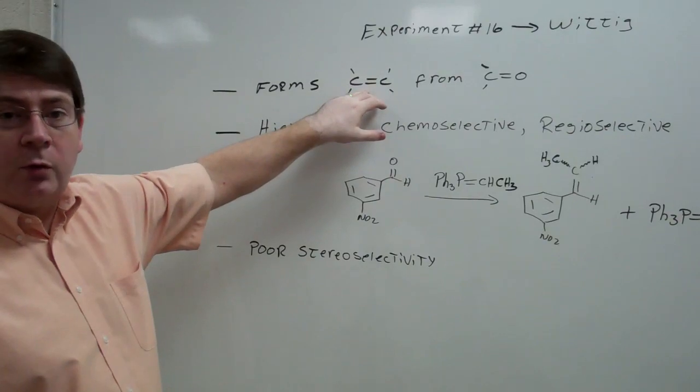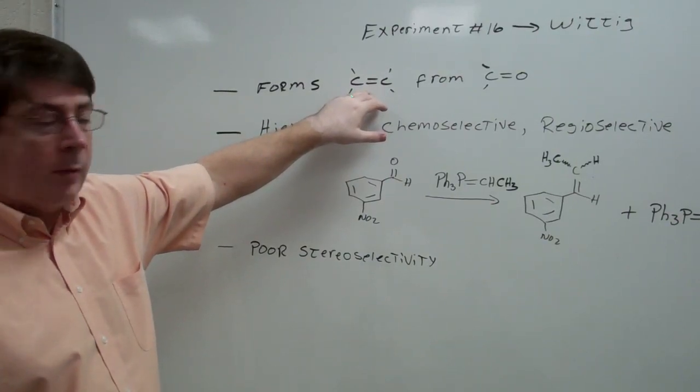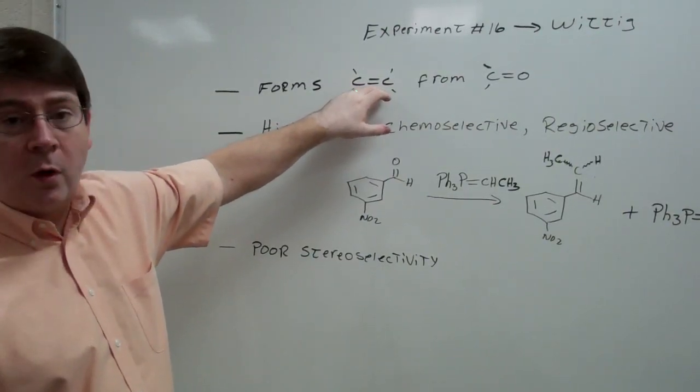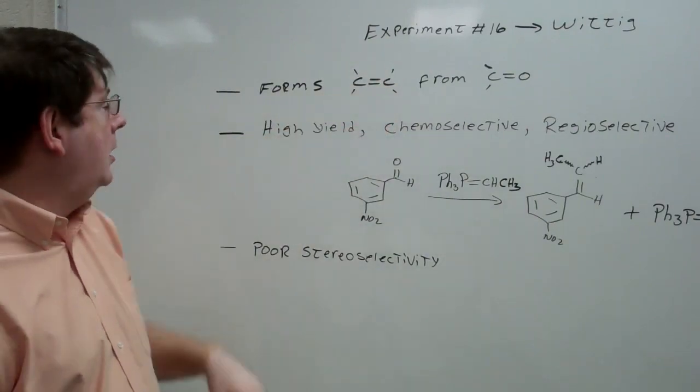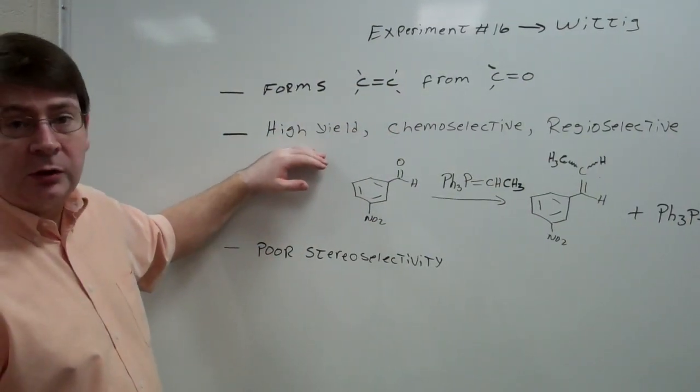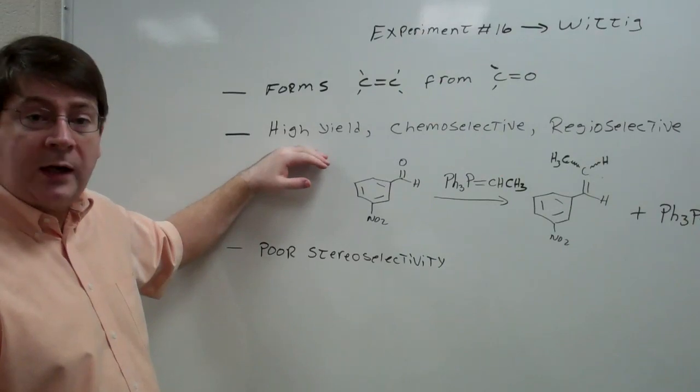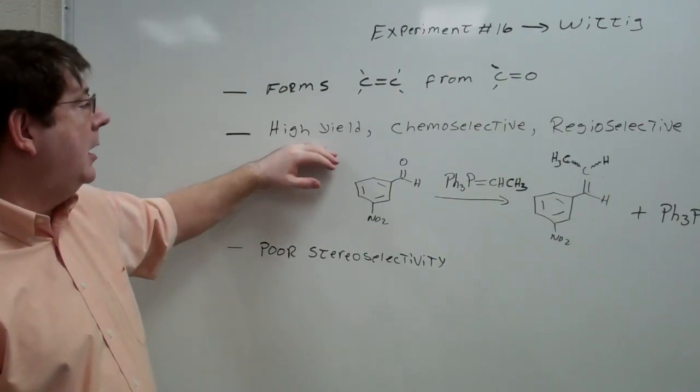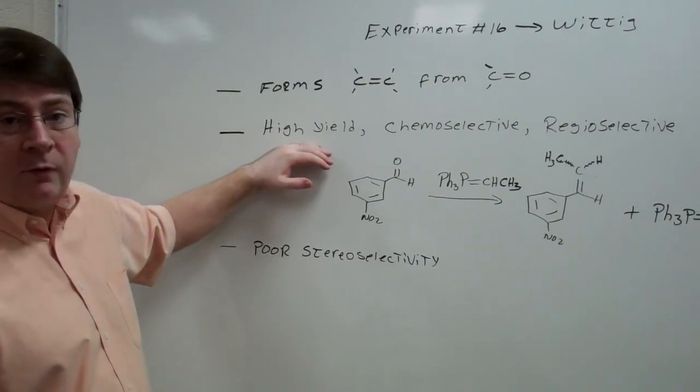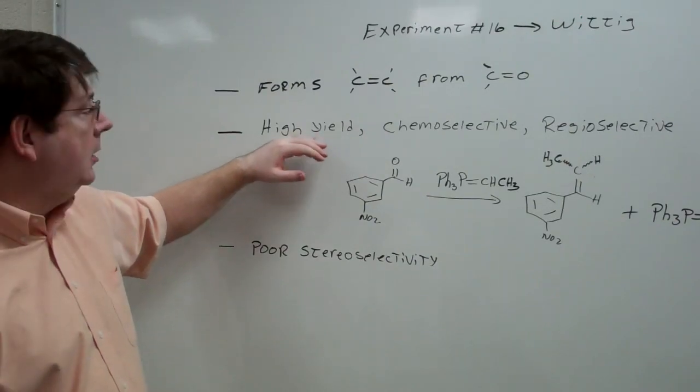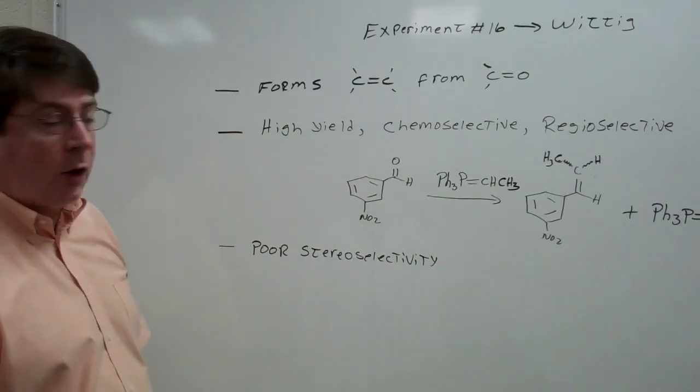It's one of these few reactions that allow us to form carbon-carbon bonds, and in this case it allows us to form alkenes very well. It is a very high yielding reaction. The yields on these reactions are typically quantitative, so 100%, but it can range anywhere from 80% to 100%, but quantitative is not unheard of.